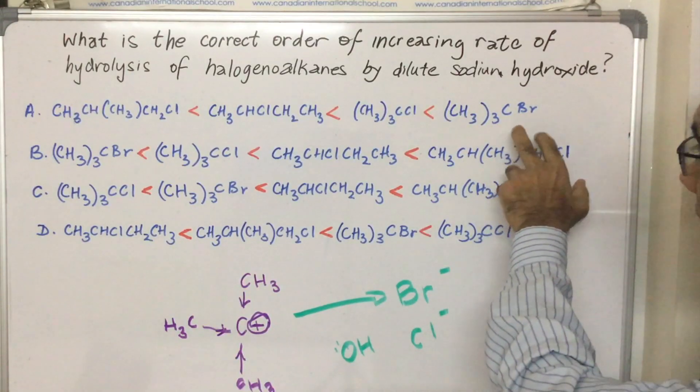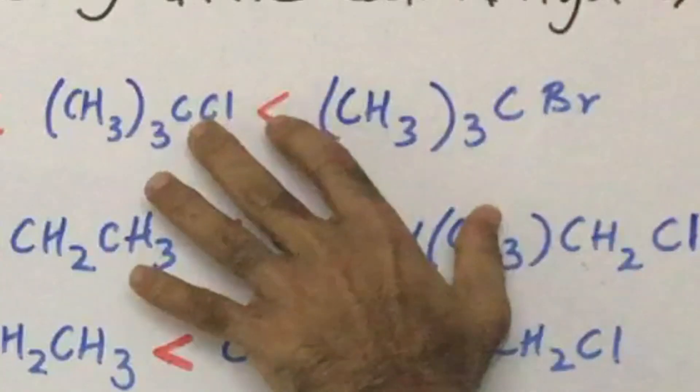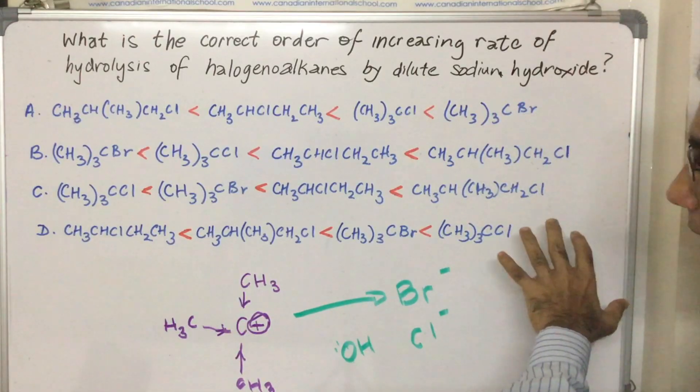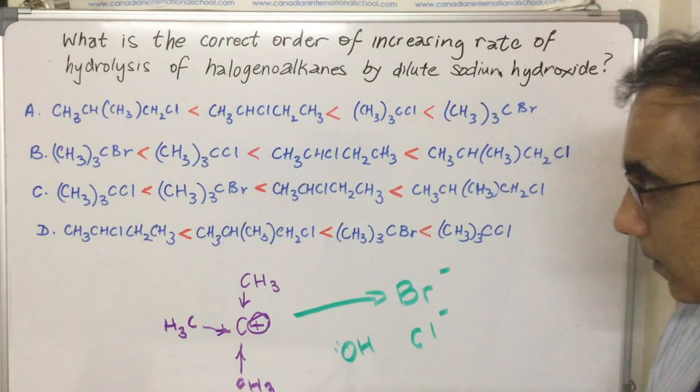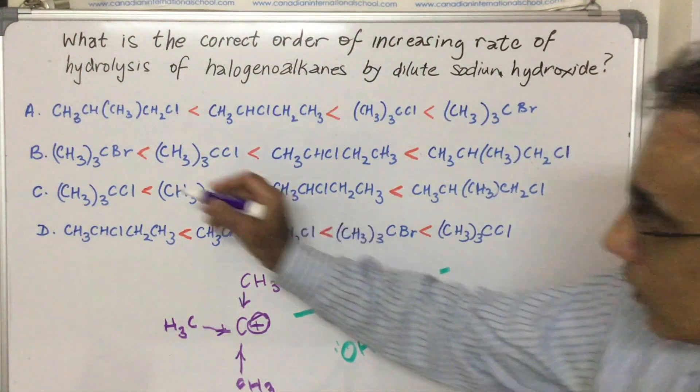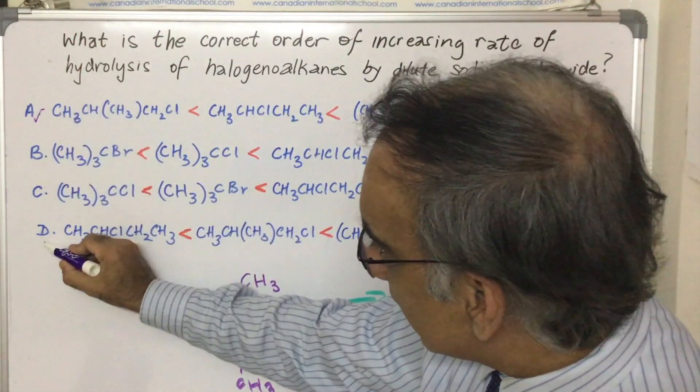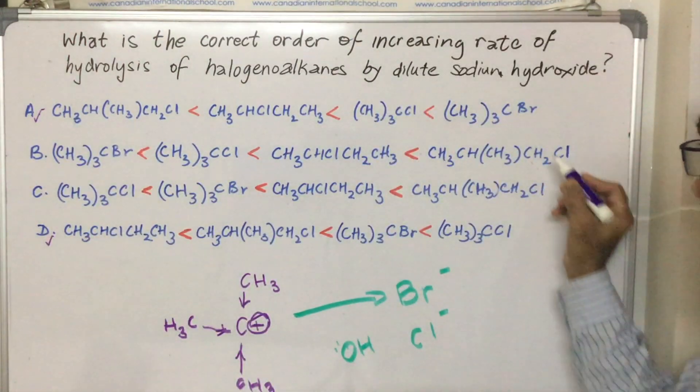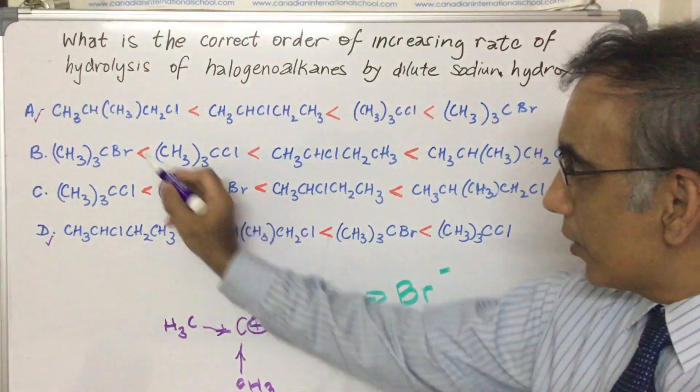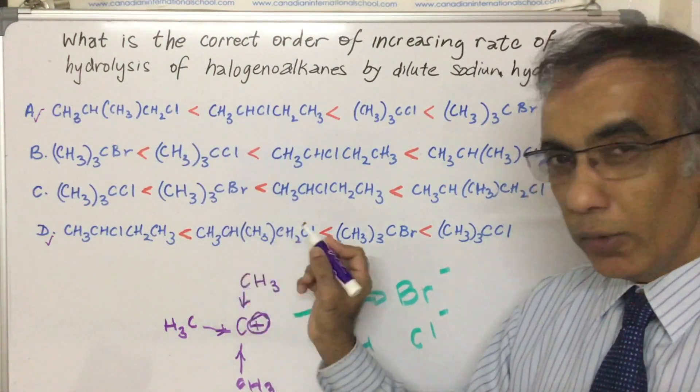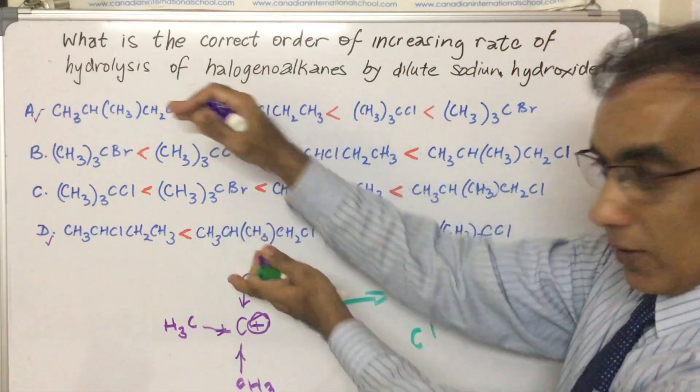Already you are looking at eliminating B and C without even considering the halogen. We have come down to a choice of A and D. A and D are pretty much identical but these two are interchanged.